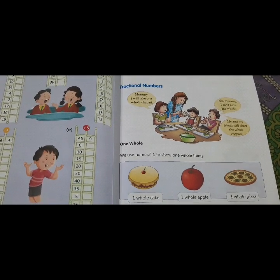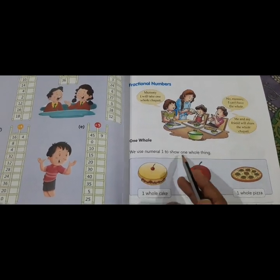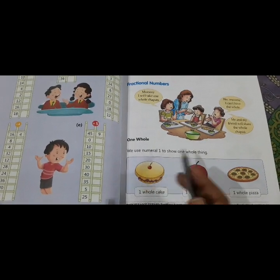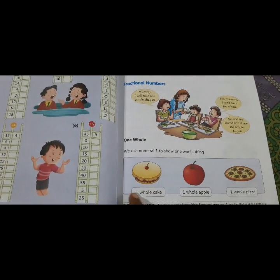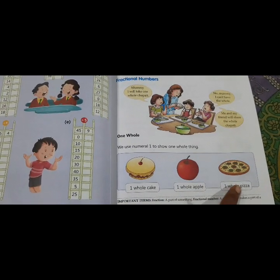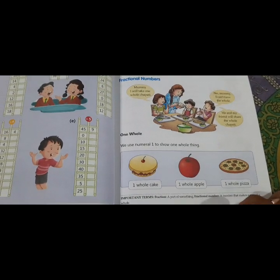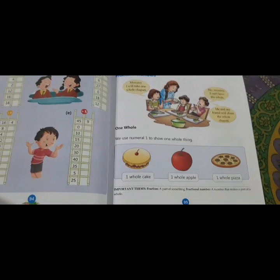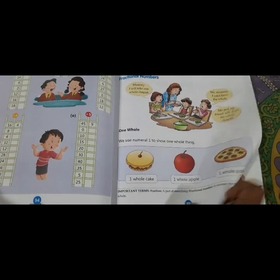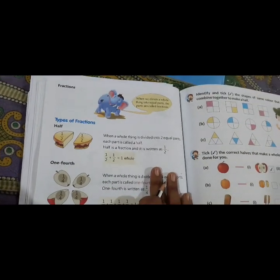Now, concept of one whole. We use numeral one to show one whole thing. This is one whole cake before cutting cake. One whole apple. One whole pizza. Turn the page.